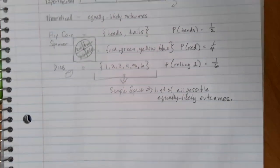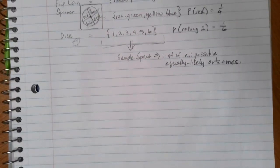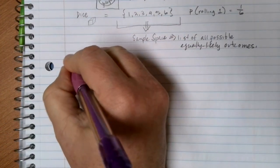Now let's consider a sample space that might be a little bit more complex. Instead of just flipping one coin, let's suppose that we want to flip two coins.